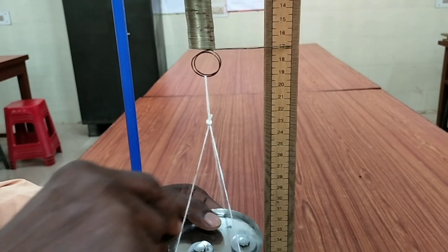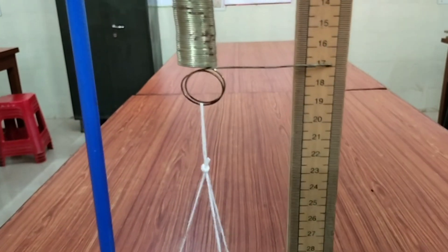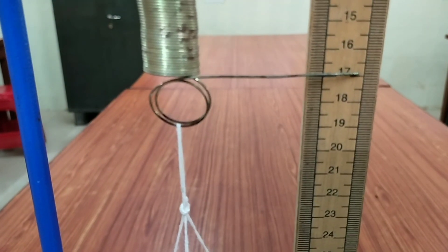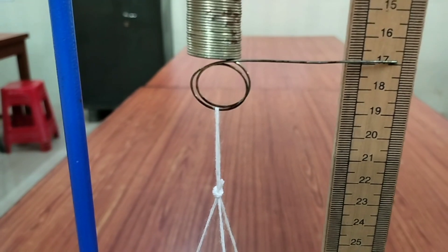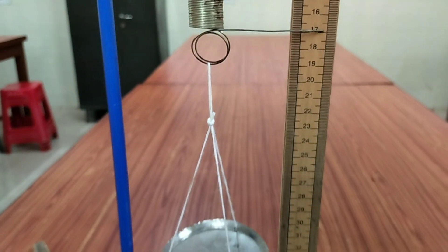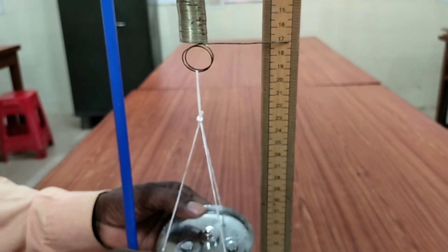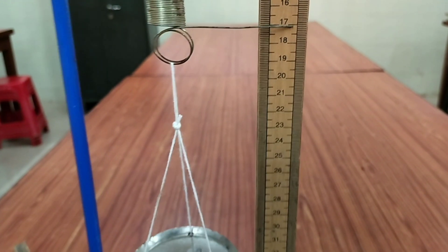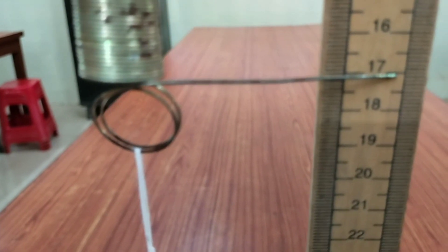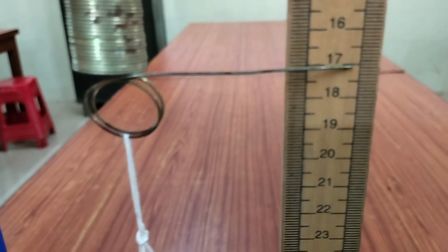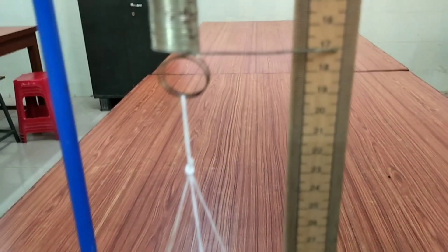Then you add 30 gram, then 40 gram like this. You increase the mass on the pan or load and measure the extension. I have given here 50 gram. I have taken 5 number of observations: 10, 20, 30, 40, and 50.